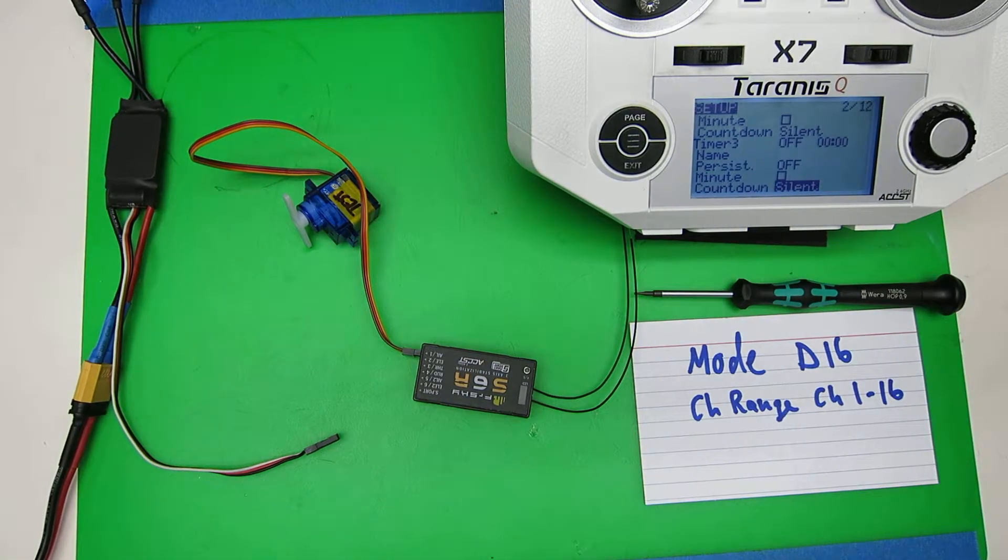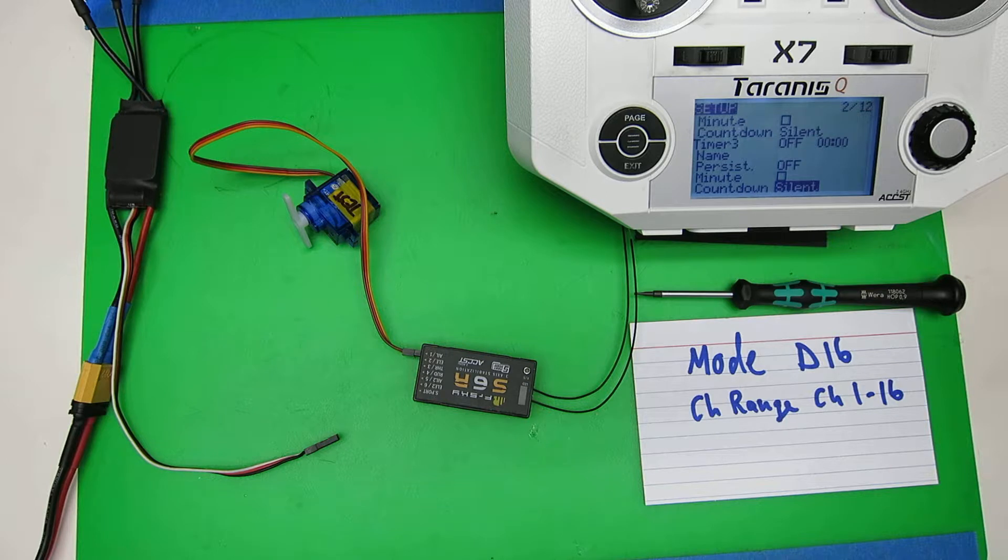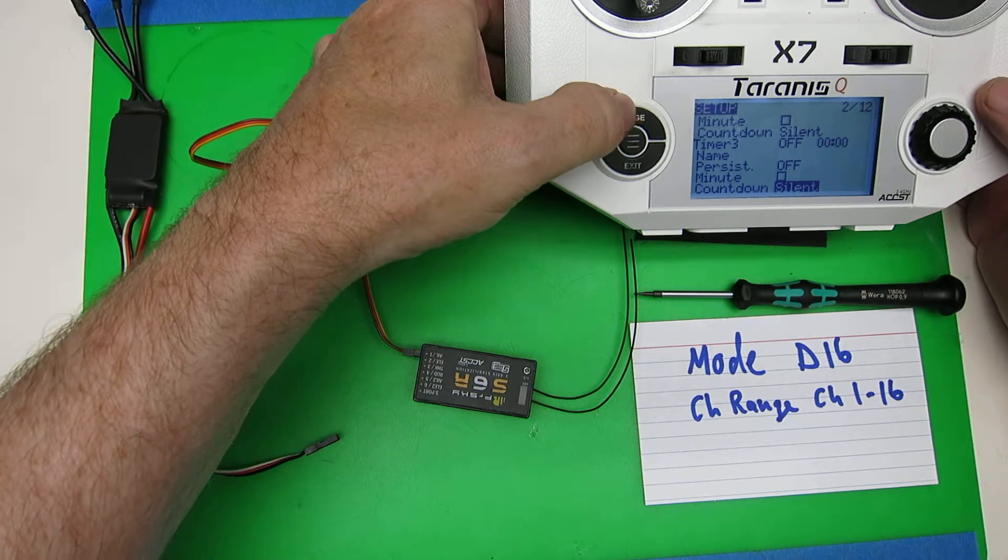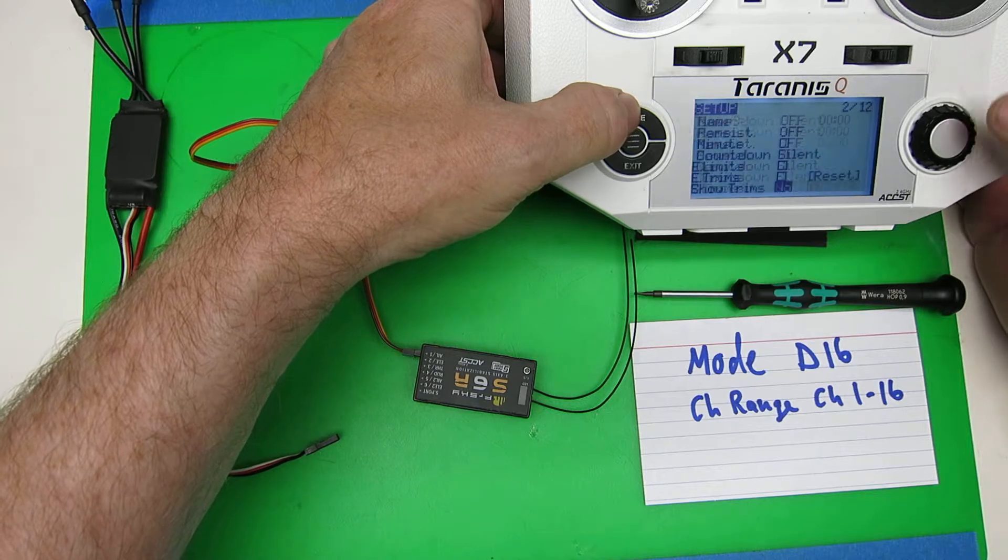Okay, the first thing we need to do to set up the stabilizers is bind them and set the failsafe. That's your standard D16 mode binding, so let's do that.